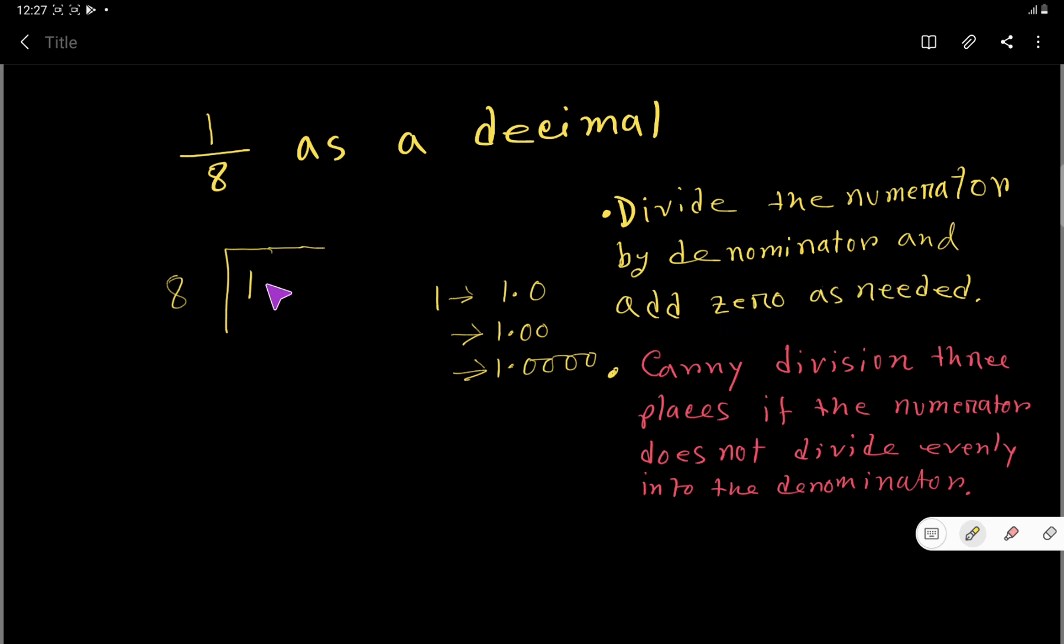That is, divide the numerator by denominator and add zeros as needed. So since 1 is less than 8, we have to take zeros. You can take any number of zeros.